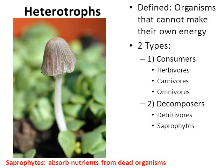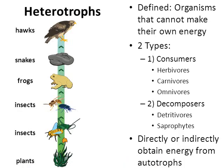Mushrooms and fungi are a great example of saprophytes. Whether the heterotroph feeds directly on plants or indirectly — for instance, a frog gets its energy indirectly from the plant because the frog eats the insect, which ate another insect, which ate a plant — all life, directly or indirectly, relies on autotrophs for energy.